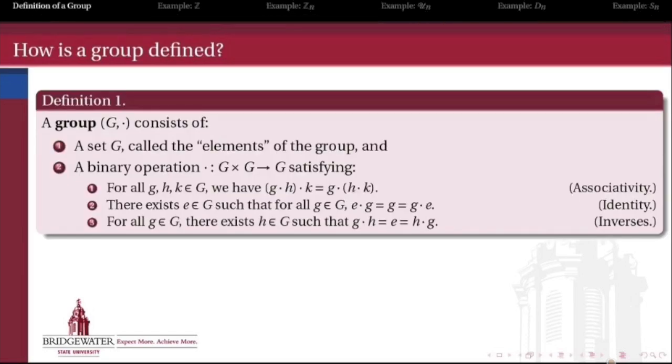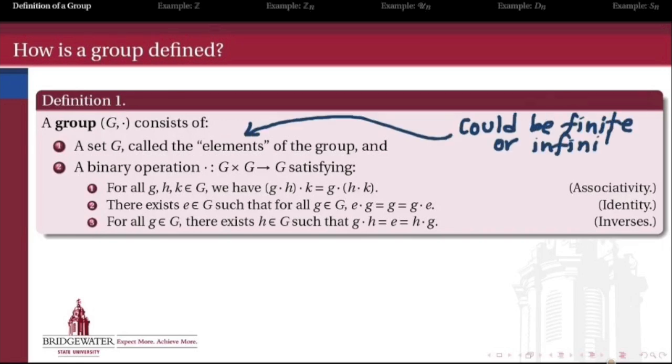So what is a group? A group is the most basic setting in which we can do arithmetic and algebra. A group has a bunch of objects in it, called the elements, and this could be a finite or infinite set of elements. What's most interesting are groups with a finite number of elements. We also have an operation that can take two elements and turn it into a third, like addition or multiplication.